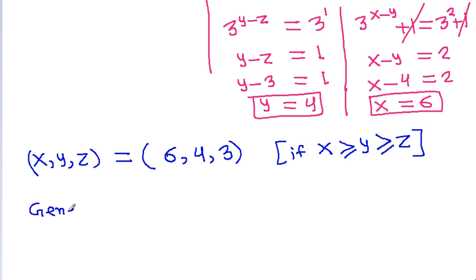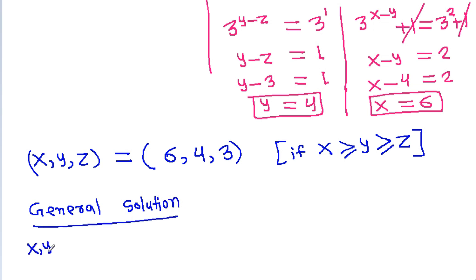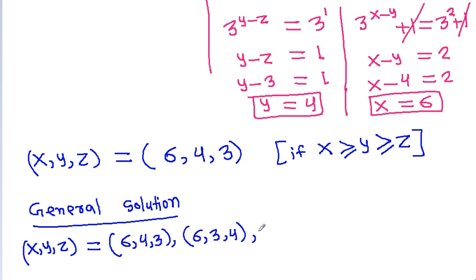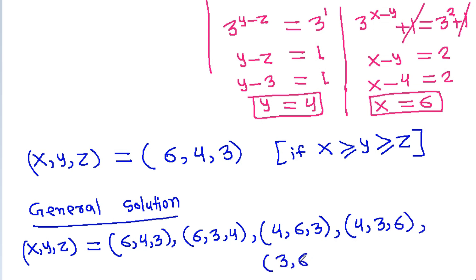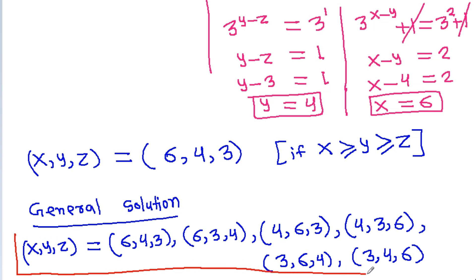The general solution: x, y, g can be any permutation of (6, 4, 3). These are the 6 values: (6, 4, 3), (6, 3, 4), (4, 6, 3), (4, 3, 6), (3, 6, 4), and (3, 4, 6).